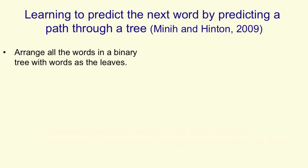A different way to avoid a great big softmax is to structure the words into a tree. So we arrange all of the words in a binary tree with the words as its leaves. We then use the context of previous words to generate a prediction vector, V.